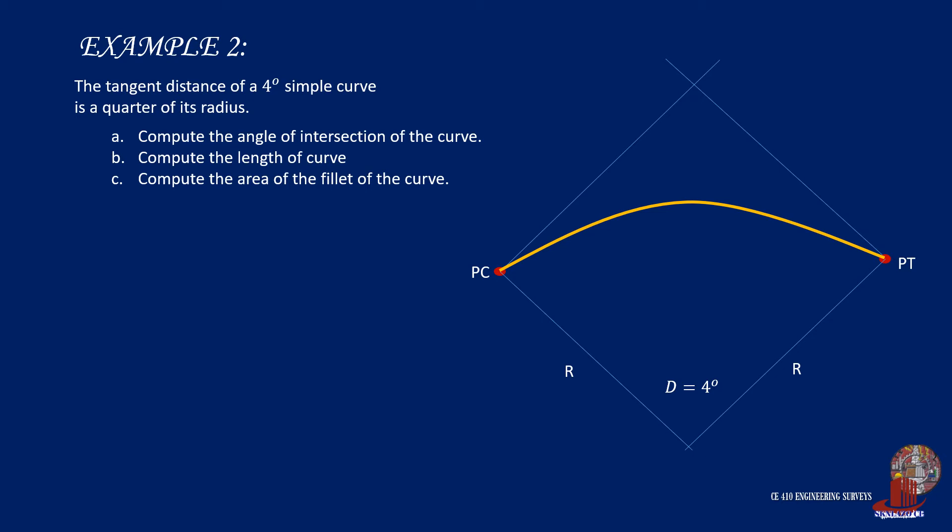Let's start with that. We know that T is the radius times the tangent of half of delta, and in this problem, it says T is also one-fourth of r. So by equating both T's, we get tangent of delta over 2 equals one-fourth. And we can then solve for delta, which turns out to be 28.07 degrees.